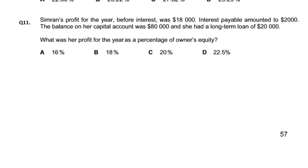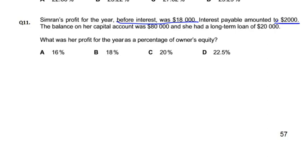Question number 11. Simran's profit for the year before interest was 18,000. The profit gained before interest was 18,000. How much interest? 2,000. And how much is Simran's capital? 80,000. And how much loan? 20,000.